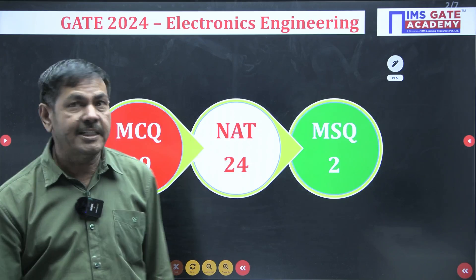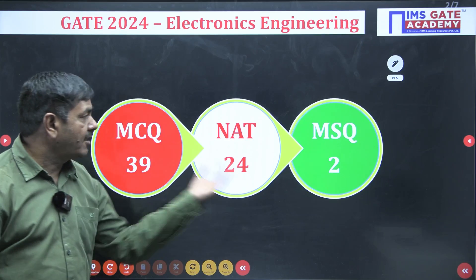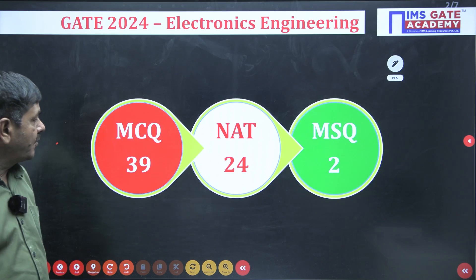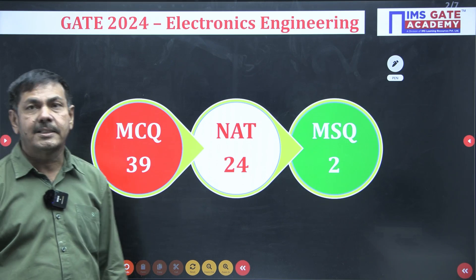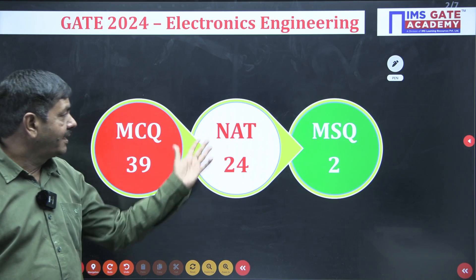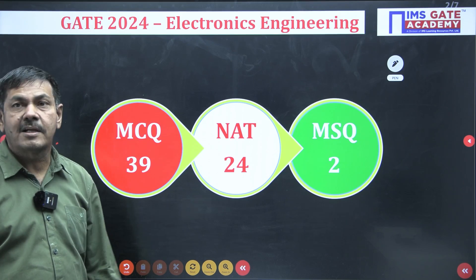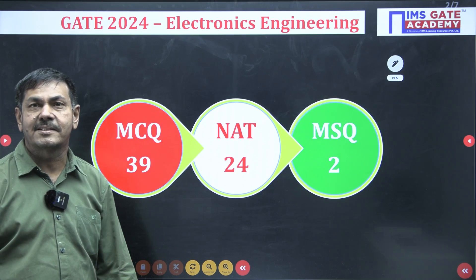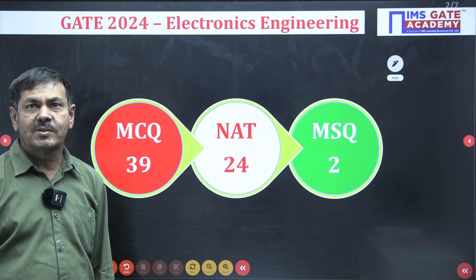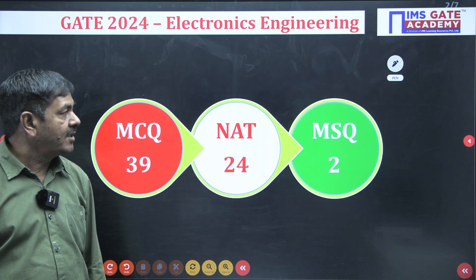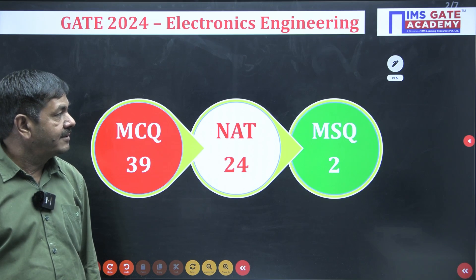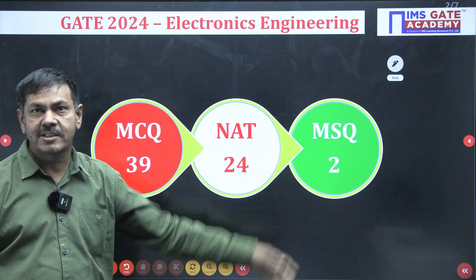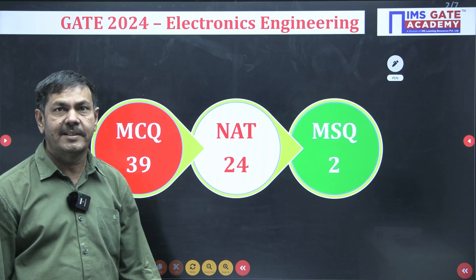These are the three types of questions asked in the GATE exam: MCQ questions — 39 were asked; NAT questions — 24 were asked; and MSQ — only 2 questions. This time not many MSQ questions were given, only two questions were given.